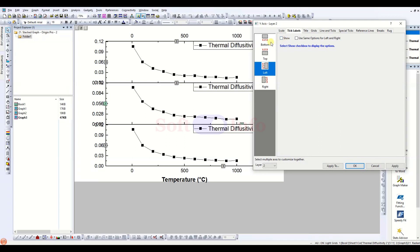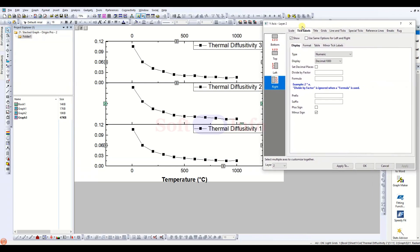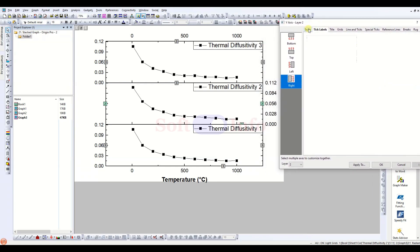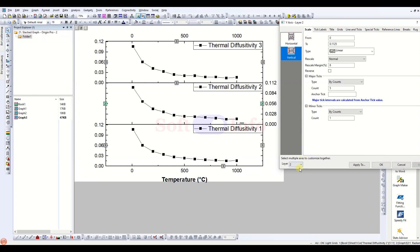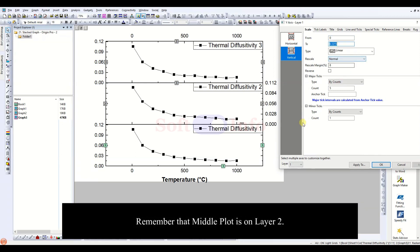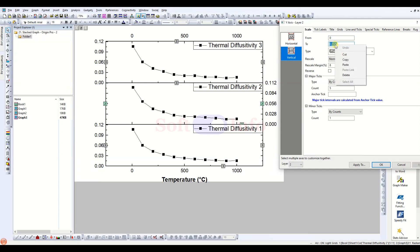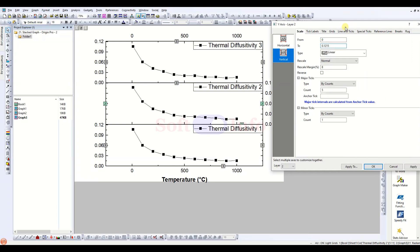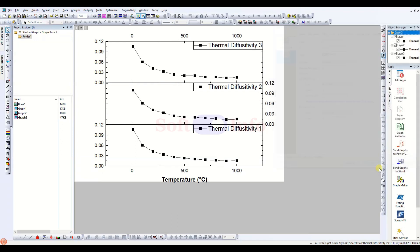Next, we will ensure that the scales of each plot are consistent. The top and bottom plots already share the same y-axis scales, so we will adjust the scale for the middle plot accordingly. Let us get rid of any unnecessary white space on the graph.